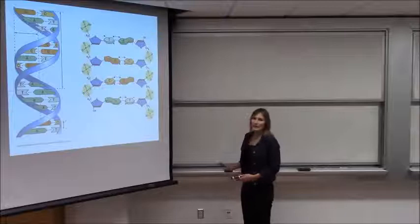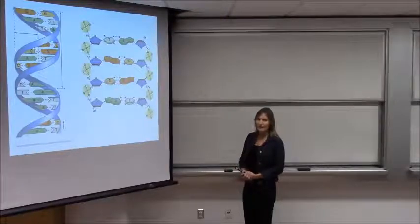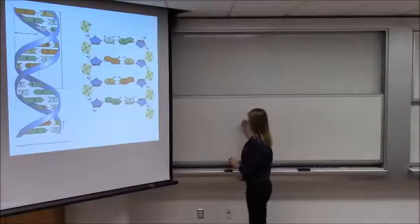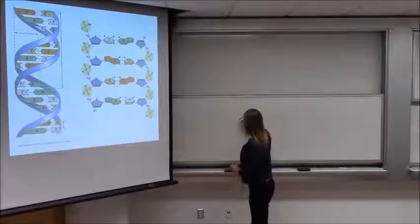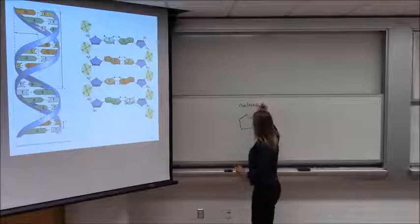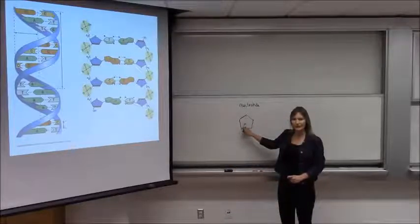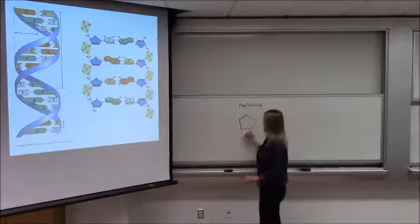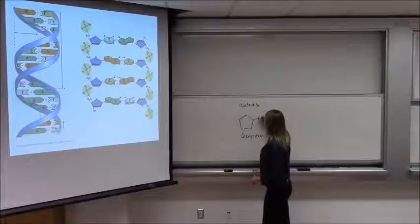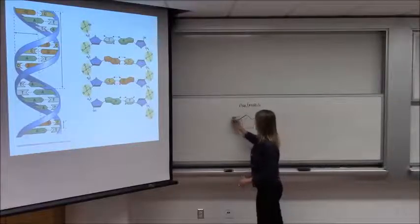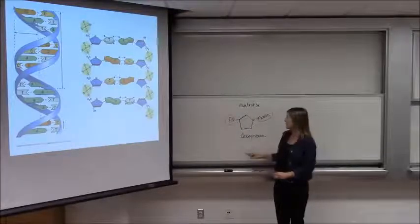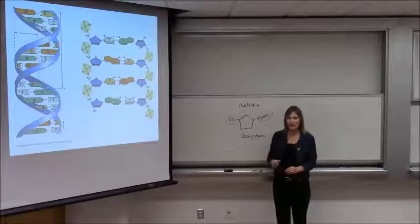Let's start by looking in a little more detail at the structure of DNA. Remember that DNA is a polynucleotide, so it's a string of nucleotides. Here's the basic nucleotide structure. Remember that it's a pentose sugar, and in this case we're talking about DNA, so our pentose sugar is deoxyribose. There's a base and a phosphate group, and these string together to make a polynucleotide.